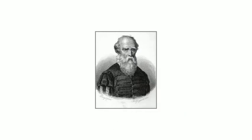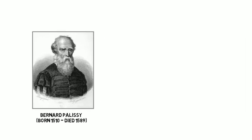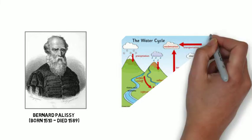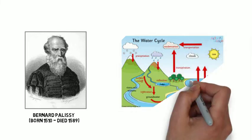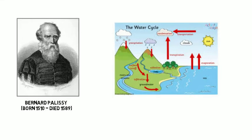In 1580, Bernard Palissy, born 1510 and died 1589, discovered the water cycle. He was the first to find out that rainfall alone was enough to maintain rivers. Bernard Palissy is considered the founder of the modern theory of the water cycle.